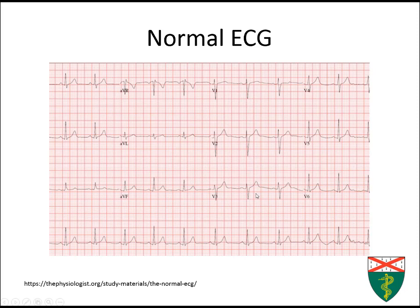As you move across the precordial leads, you can see between V3 and V4 a change called R wave progression — you go from having predominantly an S wave in V3 to predominantly an R wave in V4. By V6 there is only an R wave. The P wave is positive in Lead 1, Lead 2, and Lead 3. In V1, the upstroke represents depolarization of the right atria, and a small downstroke represents depolarization of the left atria.